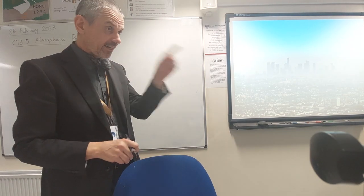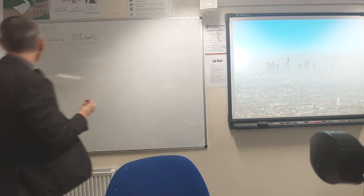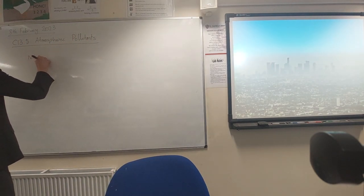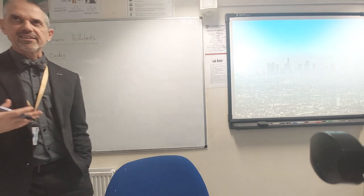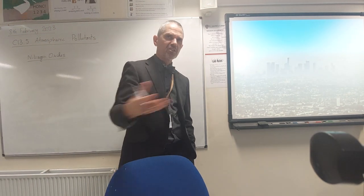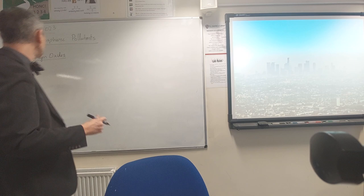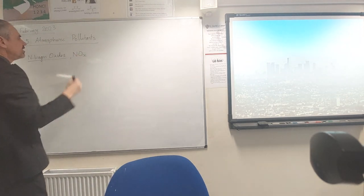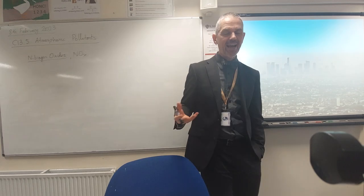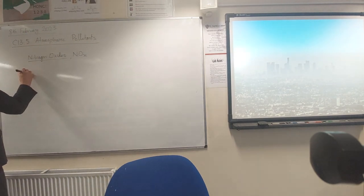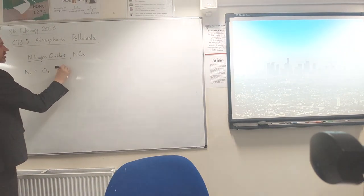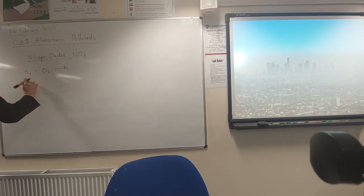There are just a few pollutants I want to look at, and we've got a summary slide as well. Nitrogen oxides - just like carbon can form carbon monoxide and carbon dioxide, there are several oxides of nitrogen: nitrogen dioxide, nitrogen trioxide, and others. We usually summarize them all as nitrogen oxides with the general formula NOx. Nitrogen oxides are formed in cars when nitrogen and oxygen gases react at high temperatures in car engines.